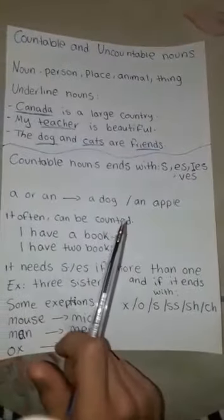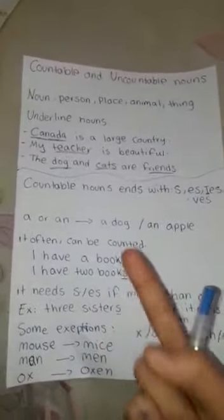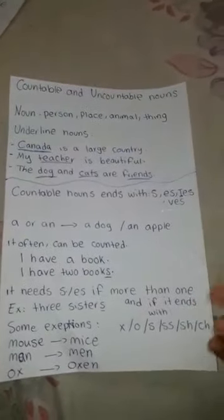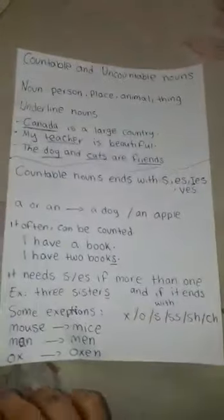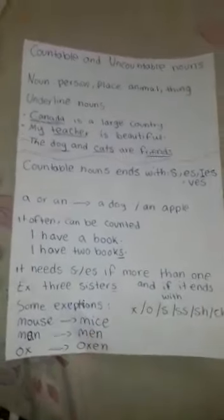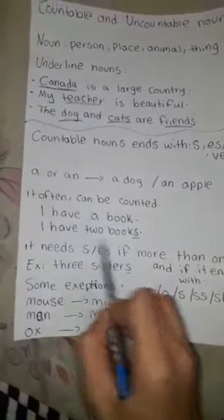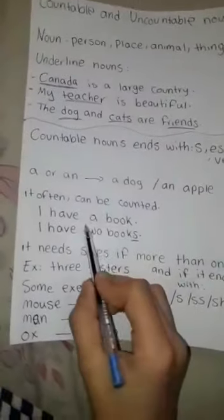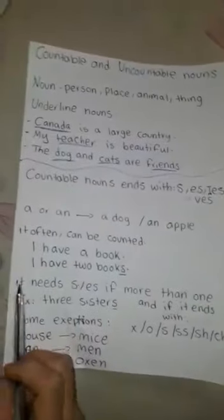For example, 'I have a book.' The word 'a' means only one book. We shouldn't say 'I have a books' — it doesn't match. We should not add -s with the article 'a.' But we can say 'I have two books.' That is a plural sentence. When we have two or more, we add -s at the end.